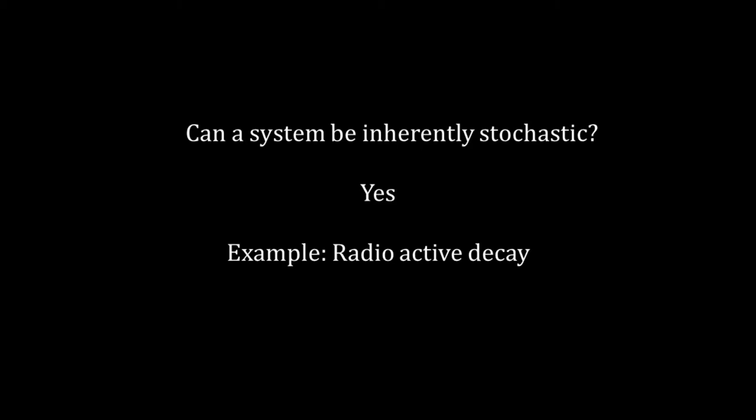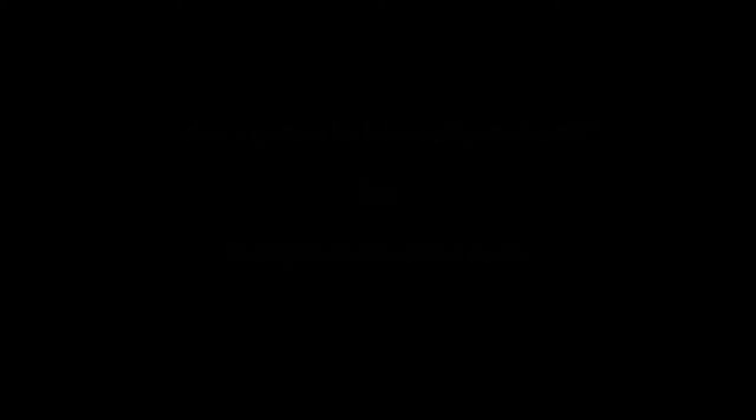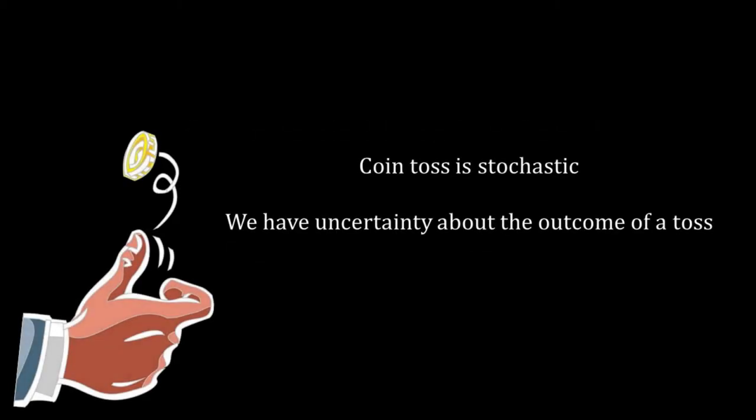We will focus only on uncertainties arising out of our ignorance. Let's take two examples to understand our definition of a stochastic process. First, the coin toss—a textbook example. Coin toss is a stochastic process. We cannot predict exactly whether we will get a head or a tail in a toss. There is uncertainty.